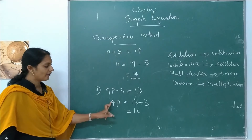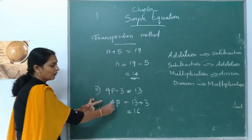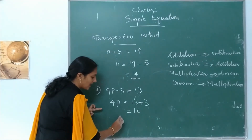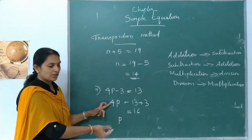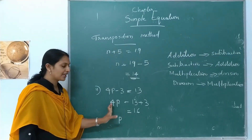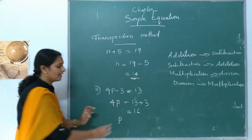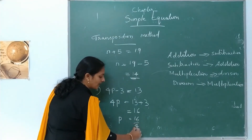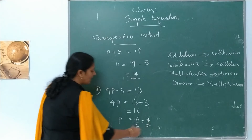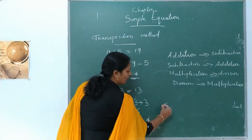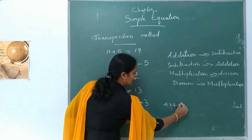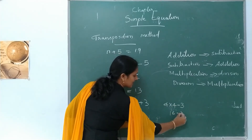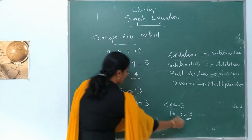Now 4P is equal to 16. Transpose 4 — multiplication becomes division. So P is equal to 16 divided by 4, that is equal to 4. Checking: 4 into 4 minus 3, 16 minus 3, that is equal to 13. Correct.